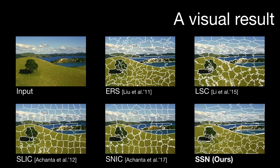Here we show a sample visual result of different techniques. Notice how SSN generates superpixels with smooth contours and also produces more superpixels near object boundaries.